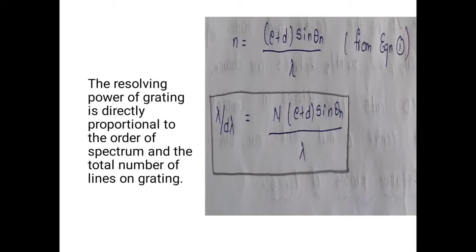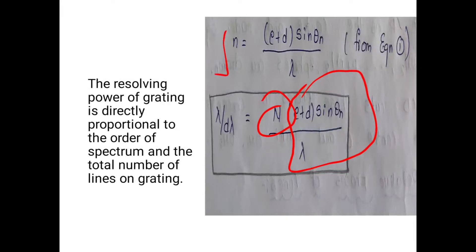The resolving power of grating lambda/d_lambda is directly proportional to the order of the spectrum n and the total number of lines in the grating N. That is, resolving power depends on the order of spectra and the number of parallel slits. So it is directly proportional to both the order of the spectrum and the total number of lines in the grating.